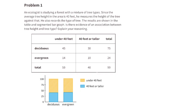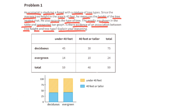Problem number 1. An ecologist is studying a forest with a mixture of tree types. Since the average tree height in the area is 40 feet, he measures the height of each tree against that and also records the type of tree. The results are shown in the table and segmented bar graph. Is there evidence of an association between tree height and tree type? Explain your reasoning.